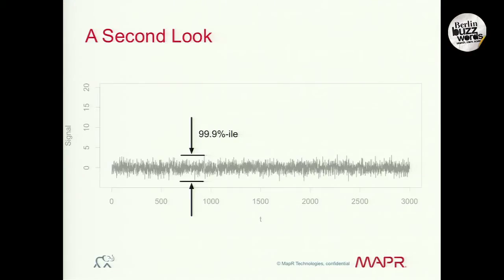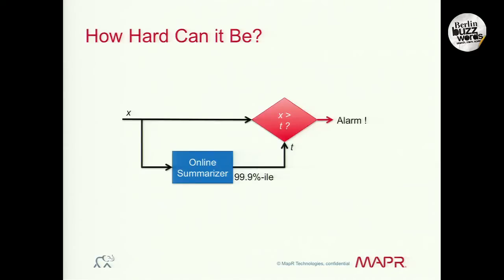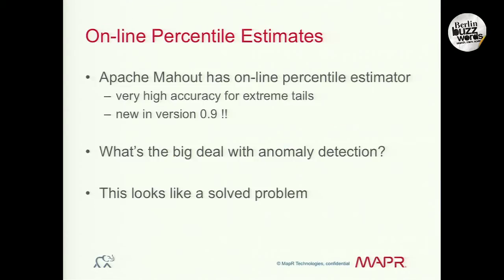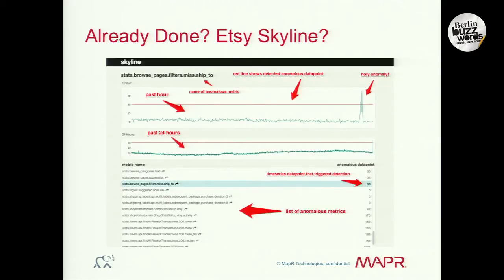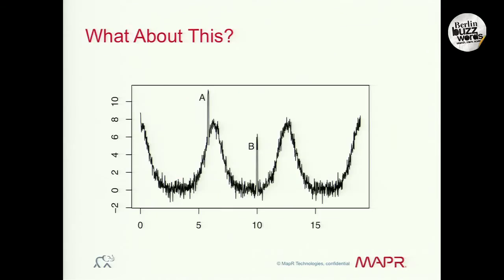We could automatically, using things like the T-Digest, set thresholds. The system can let us set a budget — we want to be woken up this many times per month — and we want most of those to be when there really is a problem. The online summarizer picks whatever percentile we want. Mahout has this. But it's not quite so easy. Etsy has released Skyline. But what about signals where anomaly B is hiding in a valley? A simple threshold is definitely not going to work.